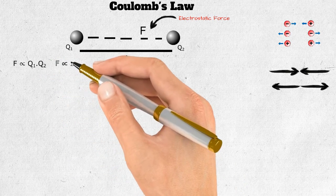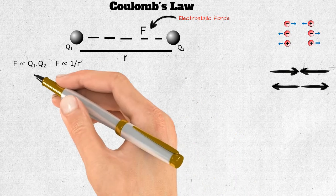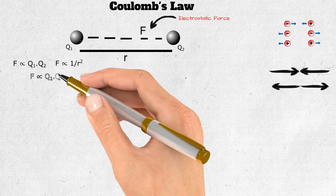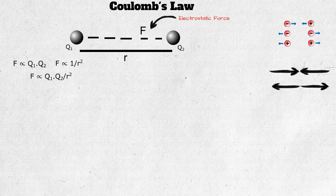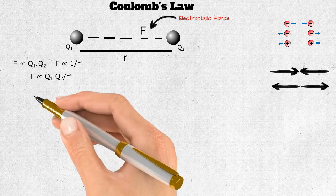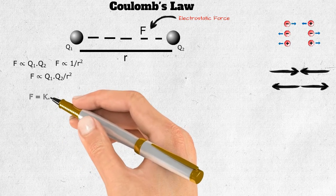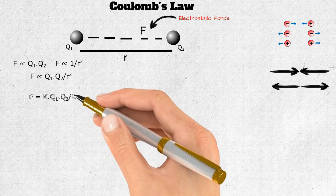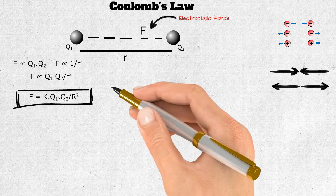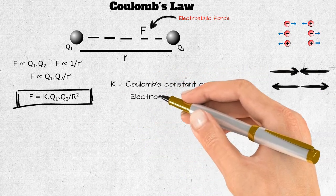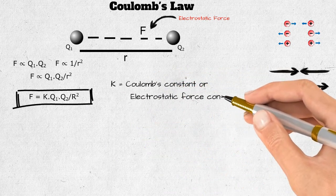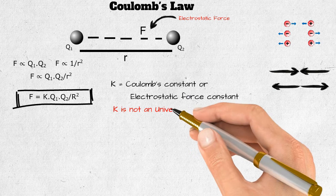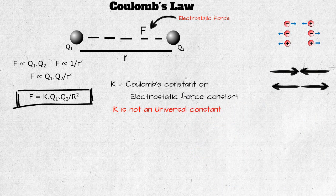The force is directly proportional to the charges and inversely proportional to the distance of separation. F is directly proportional to q1 times q2 upon r squared. On adding a proportionality constant k, we get F equals k·q1·q2 / r², where k is Coulomb's constant or electrostatic force constant. k is not a universal constant, as its value changes on changing the medium of the system.